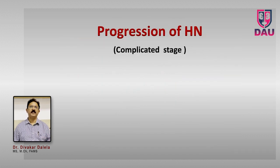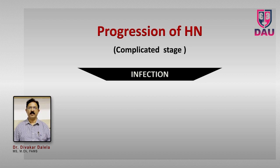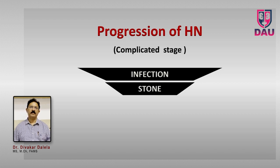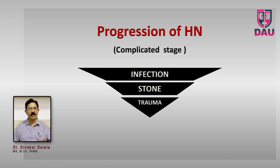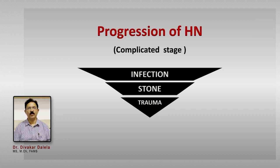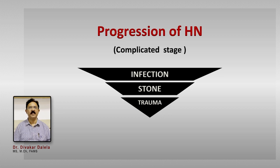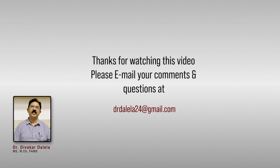In the complicated stage, most patients develop infection — this is the commonest complication in the hydronephrotic kidney — followed by stones or trauma in that order of commonness. Whenever they happen, they will suddenly damage the kidney a little more. Over and above the existing damage, a new factor will play to damage the kidney more — these are usually acute events in these kidneys. I hope you understood the progression of renal damage in a case of PUJ obstruction.